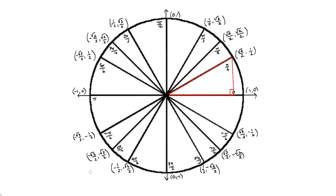There's our right triangle. I'm going to write in my angle here — my angle is pi over 6 — and remind you what the sides of this triangle were. The hypotenuse was 1, the radius of the unit circle. We determined that this side was radical 3 over 2, and we determined that this was 1 half.